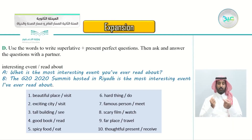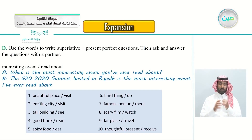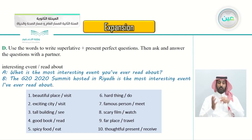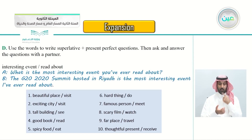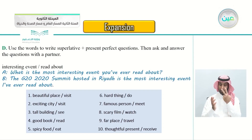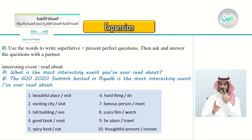Exercise D: use the words to write superlative plus present perfect questions, then ask and answer the questions with a partner. For example, 'interesting event / read about' becomes: 'What is the most interesting event you've ever read about?' The questions include: beautiful place visit, exciting city visit, tall building see, good book read, spicy food eat, hard thing do, famous person meet, scary film watch, far place travel, and thoughtful present receive.